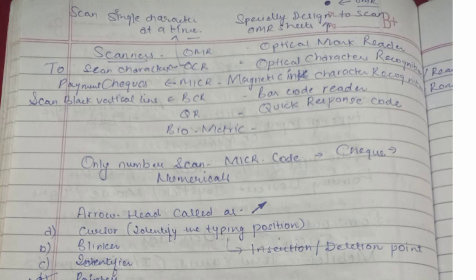MICR is used in the payment of checks. BCR — Bar Code Reader — reads black vertical lines. QR codes are Quick Response codes. Through MICR code, only numbers are scanned. The arrowhead on the computer screen is known as the pointer.